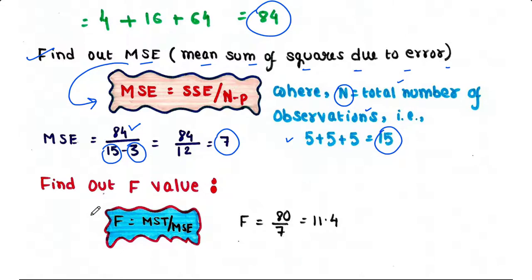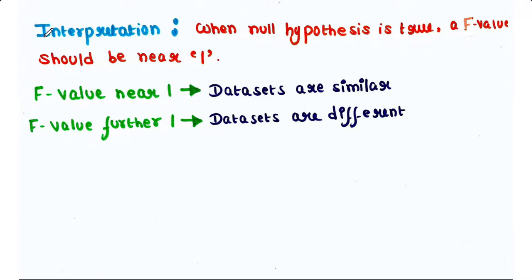Next step is to find out F value. The formula to find out F value is: F is equal to MST divided by MSE. Now we know both MST and MSE, so MST is 80 and MSE is 7. So 80 by 7 is equal to 11.4.